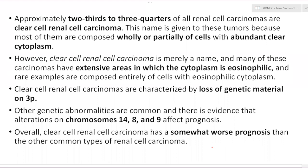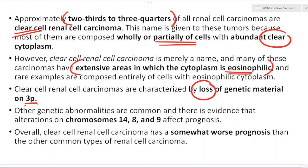The first important type is clear cell carcinoma — approximately two-thirds to three-quarters of all RCCs are clear cell. They are called clear cell because they are wholly or partially composed of cells with abundant clear cytoplasm; the presence of glycogen accounts for the clear cytoplasm. Remember, it is merely a name — the same tumor may have extensive areas of eosinophilic cytoplasm, and rarely it can be entirely eosinophilic. The key molecular alteration is loss of genetic material on chromosome 3p.